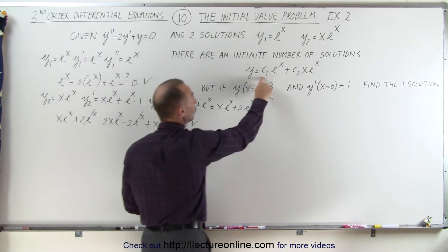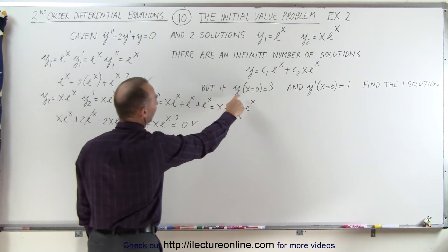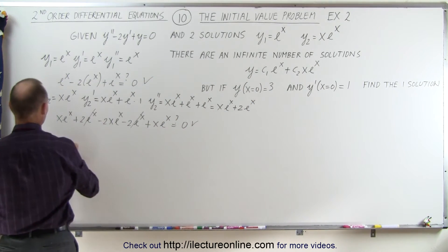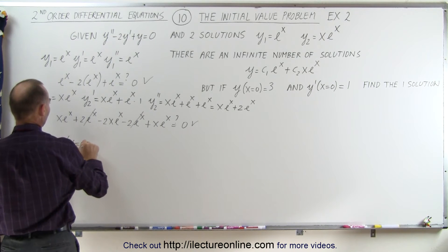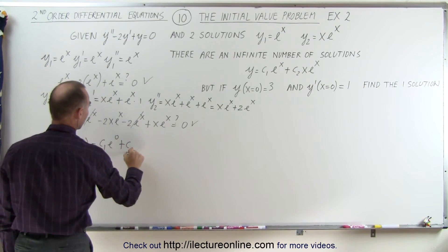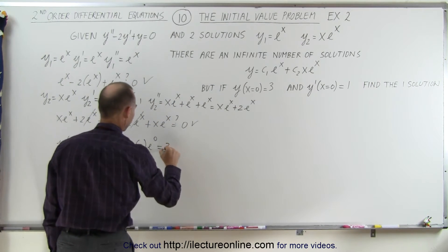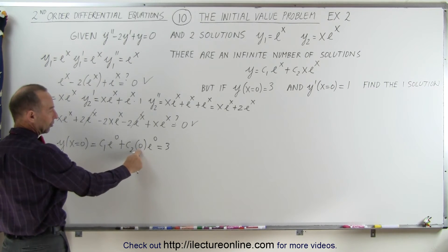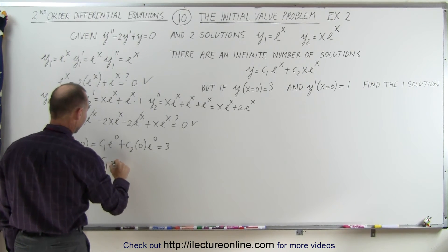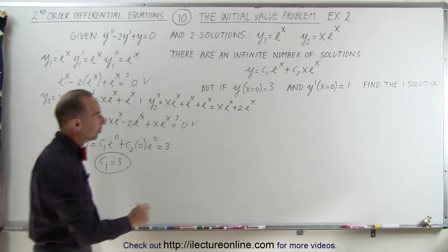Now we're trying to find c1 and c2 for the one single solution that satisfies the two initial conditions. We evaluate the function at x equals 0, because that equals 3. We have y at x equals 0 equal to c1 e to the 0, plus c2 times 0 times e to the 0, and that must equal 3. The second term goes to 0 since x is 0, and c1 times e to the 0 equals 1, so c1 equals 3.